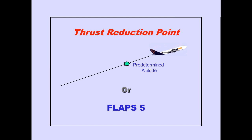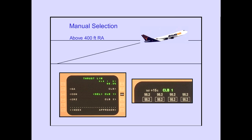At the thrust reduction point, the thrust limit changes to the selected climb thrust limit. The thrust reduction point can be defined as either a predetermined altitude or the selection of flaps 5. It is entered in the FMS-CDU during preflight. Climb thrust can be manually selected above 400 feet radio altitude. The thrust levers retard toward the climb thrust limit, and the thrust mode display changes to climb.